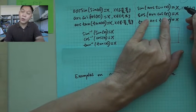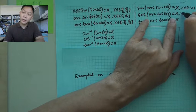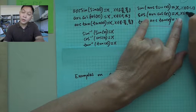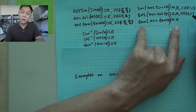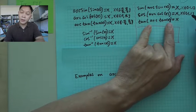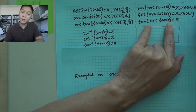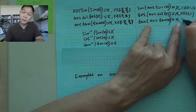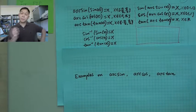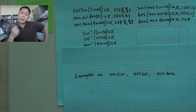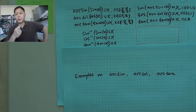And arccosine, again, x needs to be from negative 1 to positive 1. Tangent, arctangent, x can take any values, can be greater than 1 or less than negative 1.